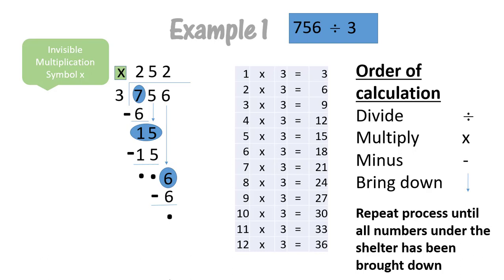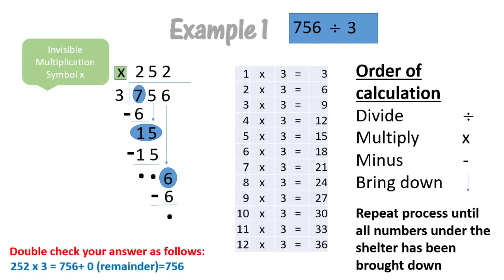You can double check your sum or your answer by doing a bit of calculation. We can say 252 times three equals 756. And in this example, our remainder is zero. You add your zero and your total equals 756.